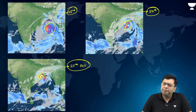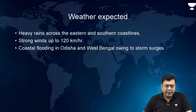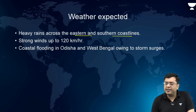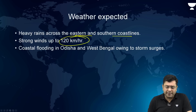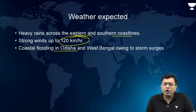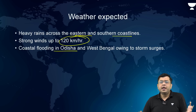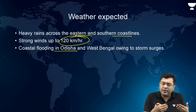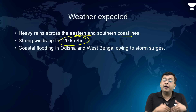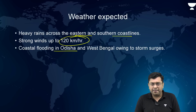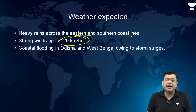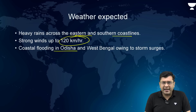Before the cyclone disappears, significant impact can be expected — heavy rains across the eastern and southern coastline, strong winds up to 120 km per hour, and coastal flooding in Odisha and West Bengal due to storm surge. A storm surge involves strong winds driving waves further inland and to a greater height, which leads to coastal flooding in these areas.